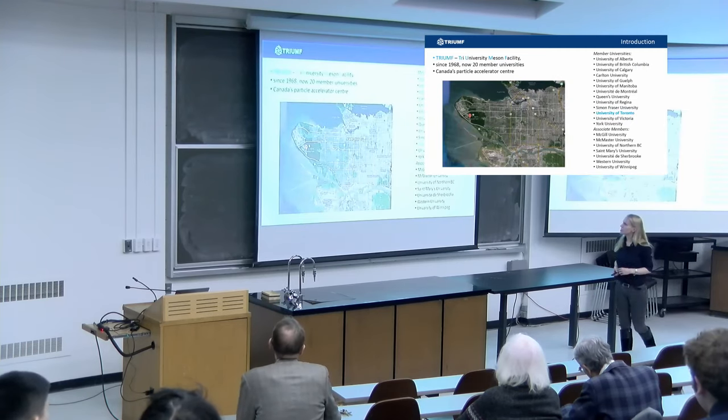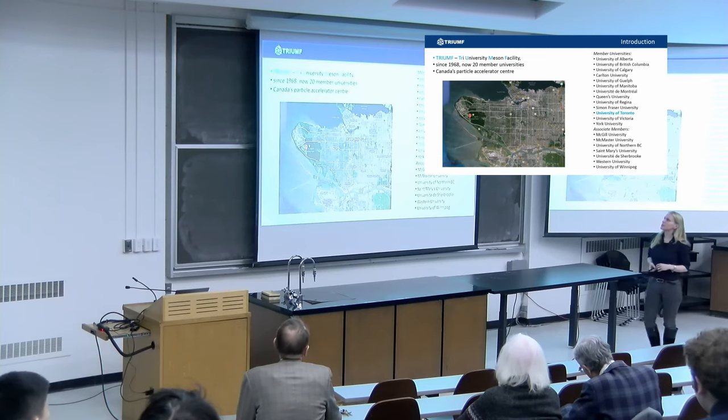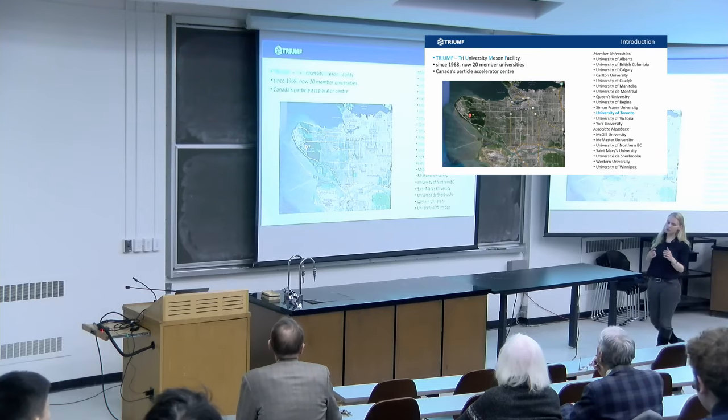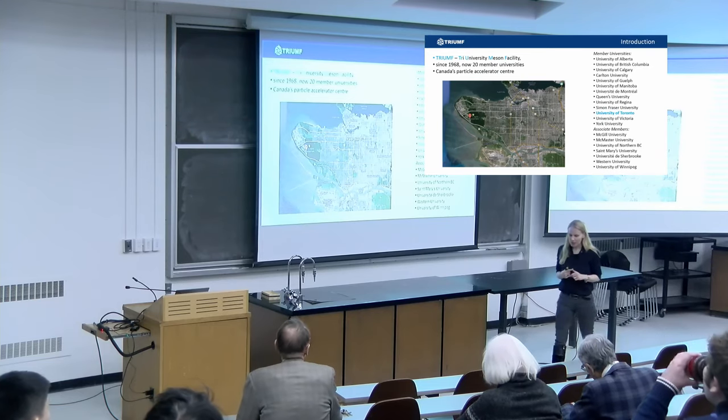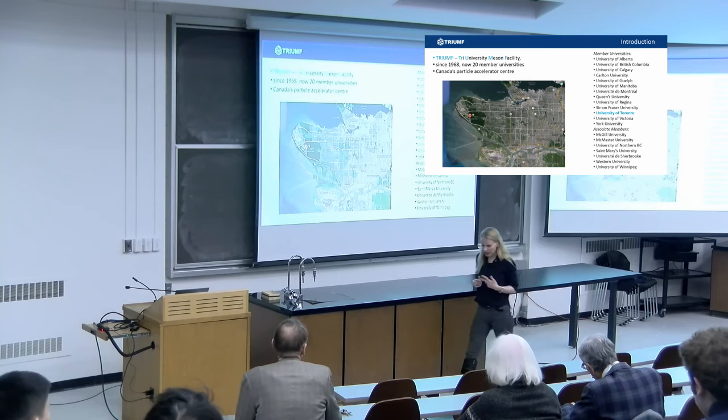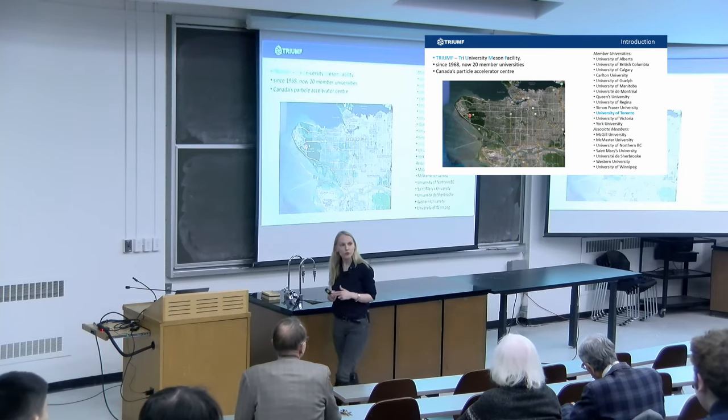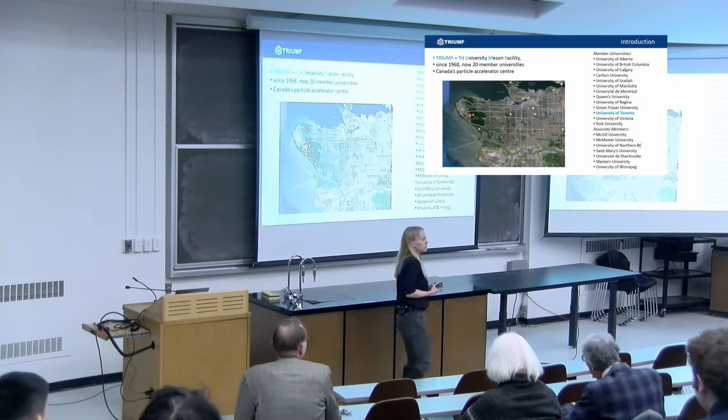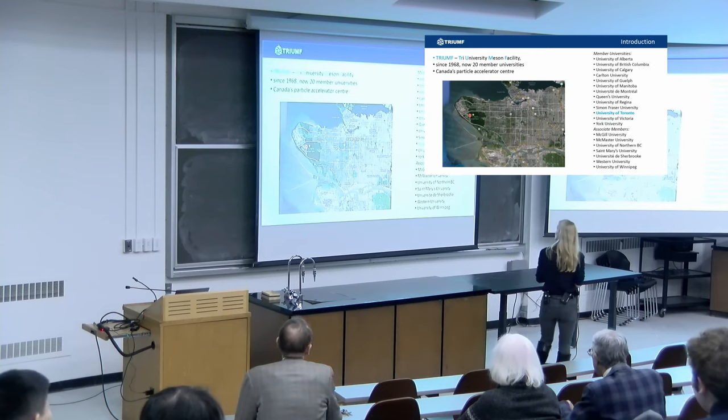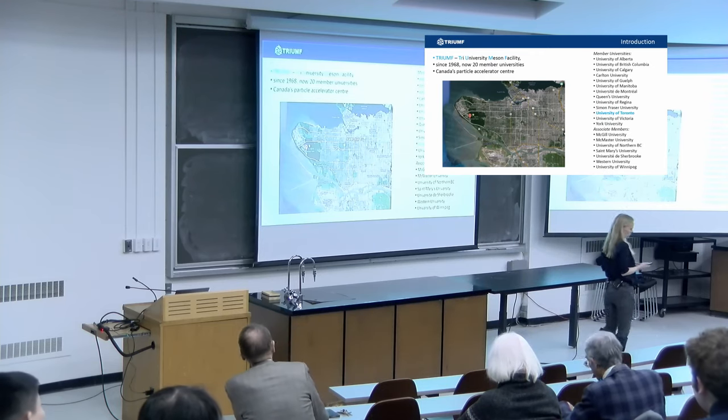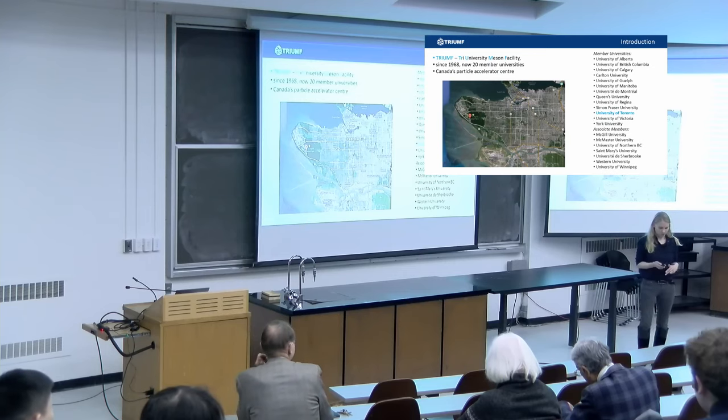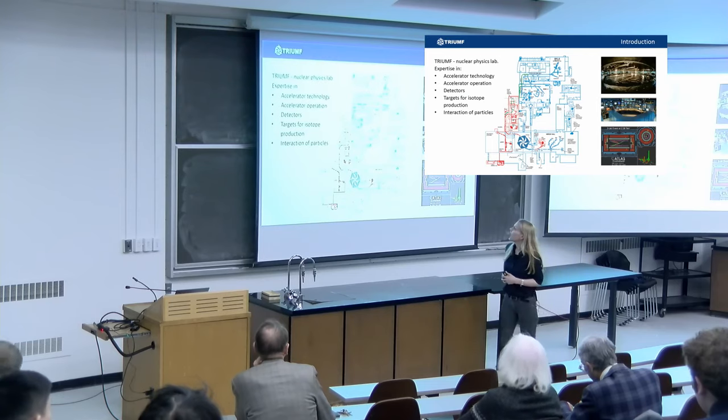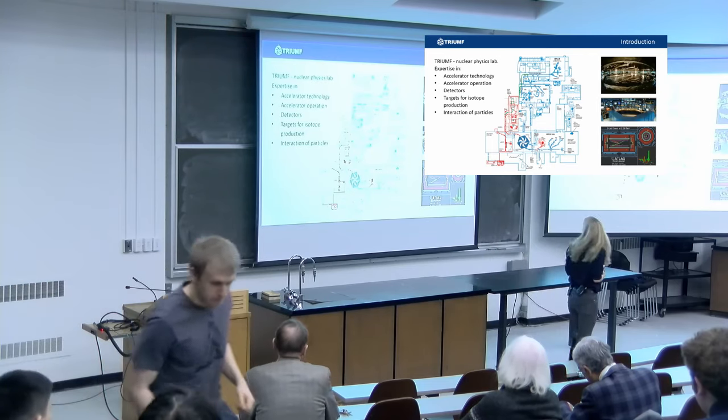We are a national lab in Canada. The name is Tri-University Meson Facility. It was founded in 1968 from three local universities: UBC, Simon Fraser, and UVic. At the first board meeting, the fourth university, University of Alberta, joined, but that didn't make a good acronym, so we kept the name. We are 20 member universities from the East Coast to the West Coast, including University of Toronto. In general, we are a nuclear and particle physics lab. We know how to build accelerators, we build our own accelerators, we know how to operate them.